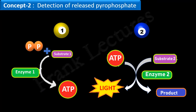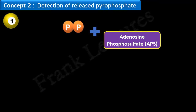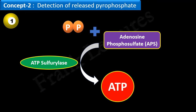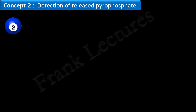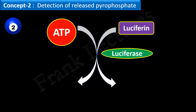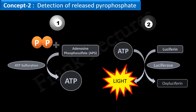When pyrophosphate combines with another substrate known as adenosine phosphosulfate, in the presence of the enzyme ATP sulfurylase, ATP is generated. In the next reaction, this ATP is utilized by the enzyme luciferase for the conversion of luciferin to oxaluciferin and production of light. Thus, the pyrophosphate released during DNA synthesis can be detected by the emission of light. This detection of pyrophosphate is the basis of DNA sequencing, and hence the name Pyrosequencing.